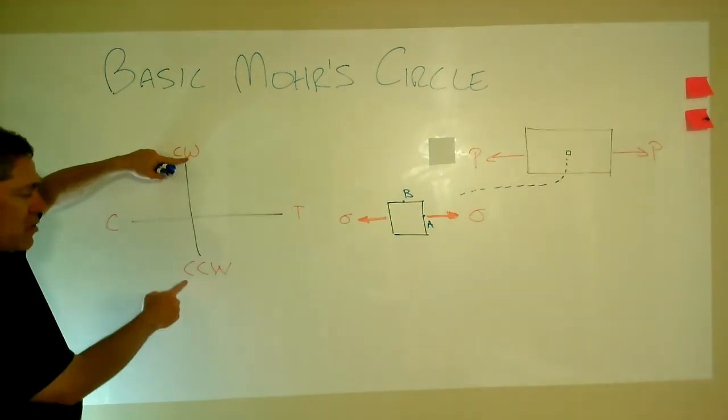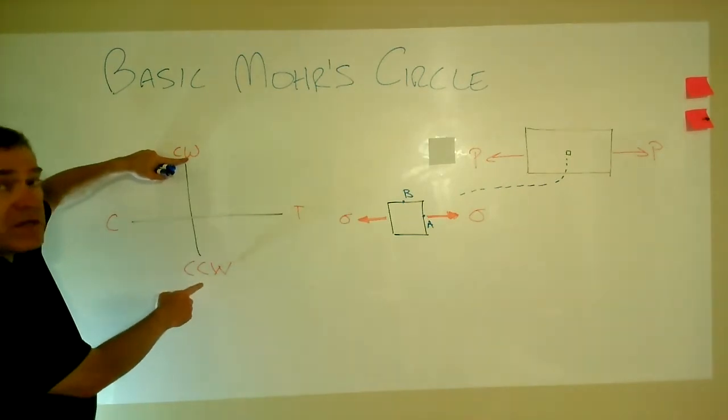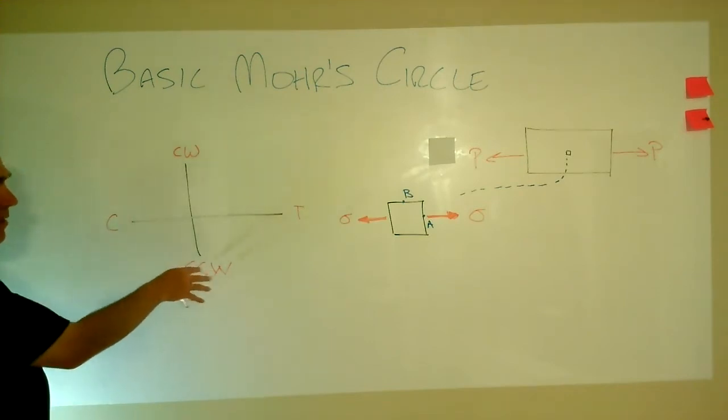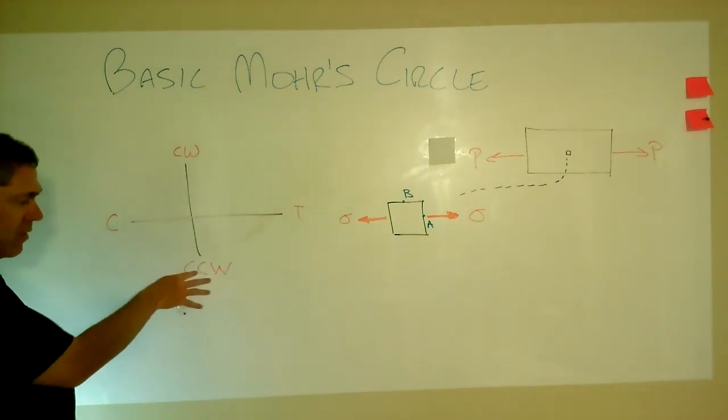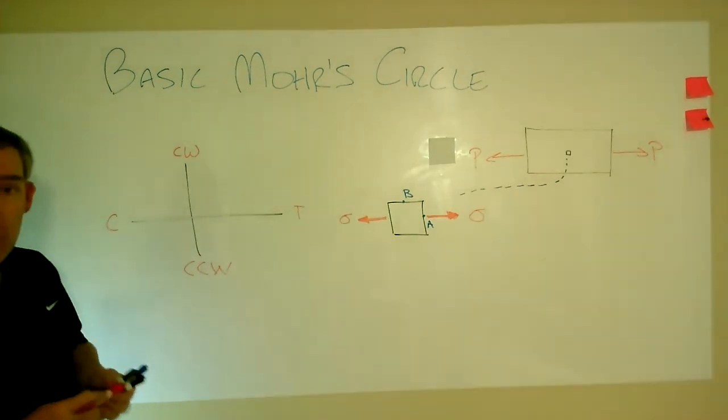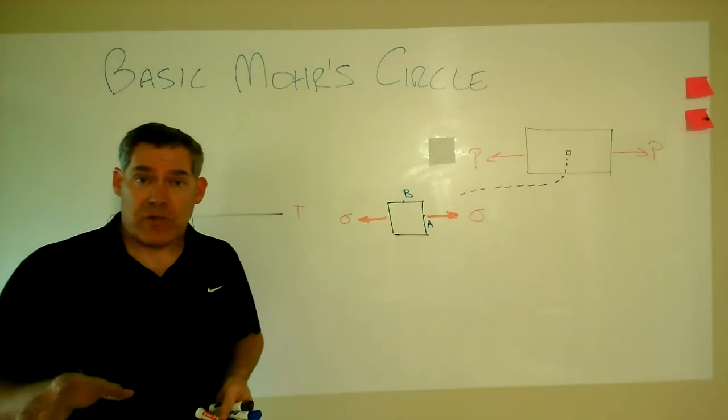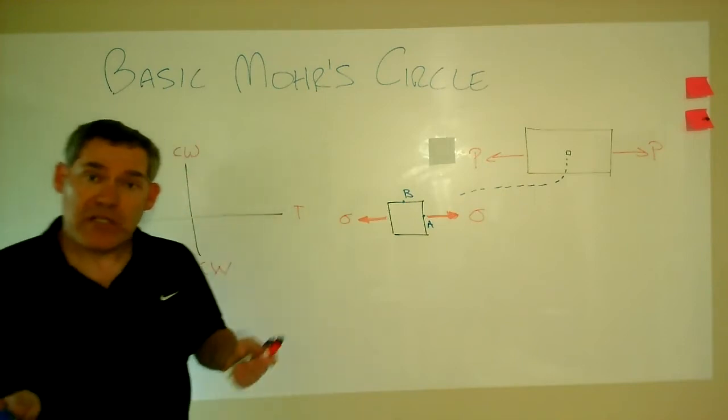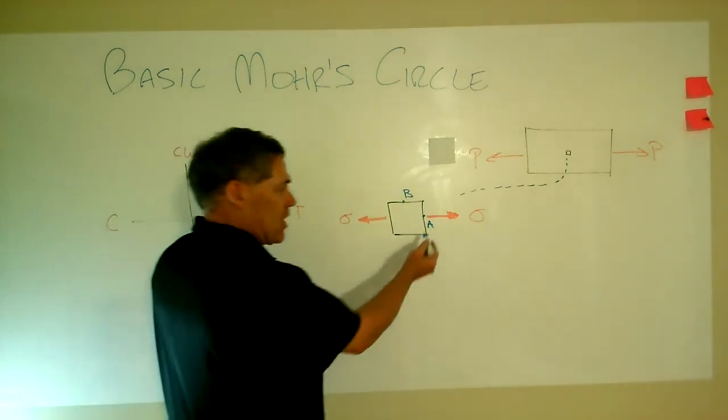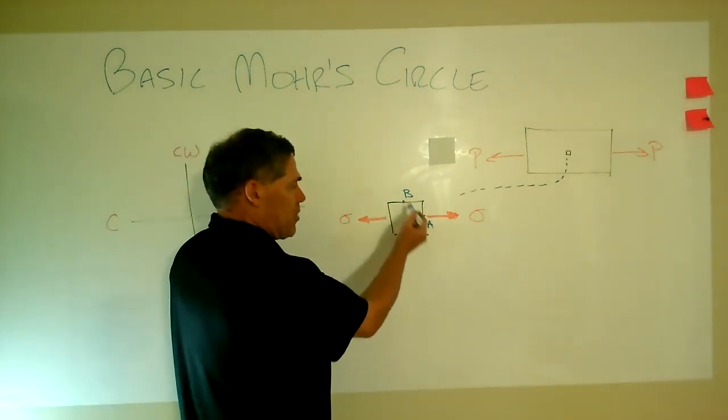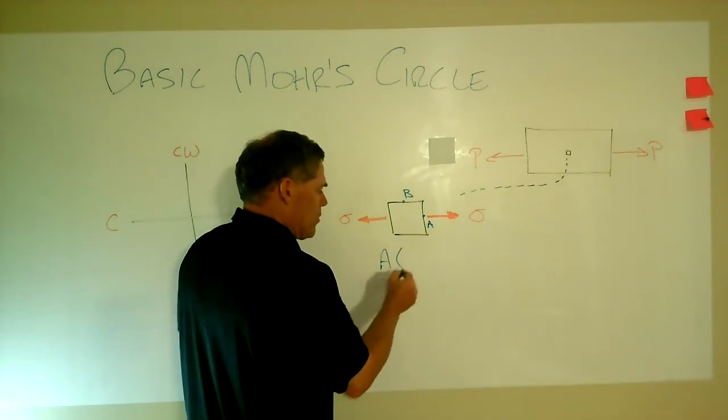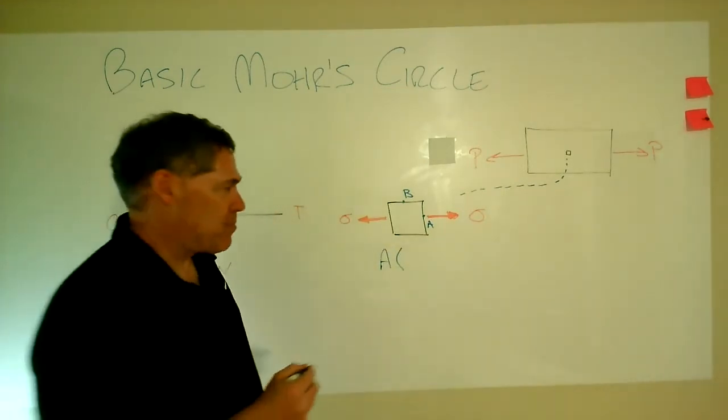And then we'll have our shear stresses on the other axis. We have counterclockwise shear stresses on the bottom and clockwise up at the top. I remember how to do this because CW has fewer letters than counterclockwise, so it's like helium, it rises to the top. The other one is heavier, so it goes down to the bottom.